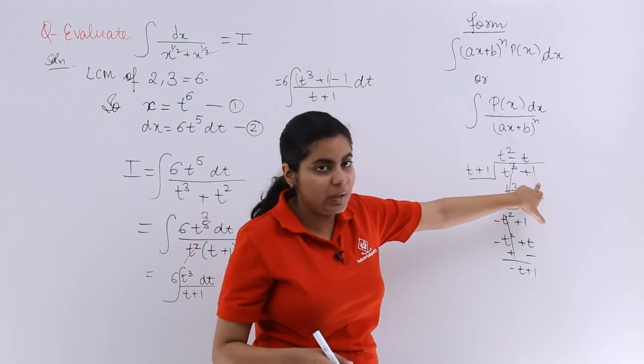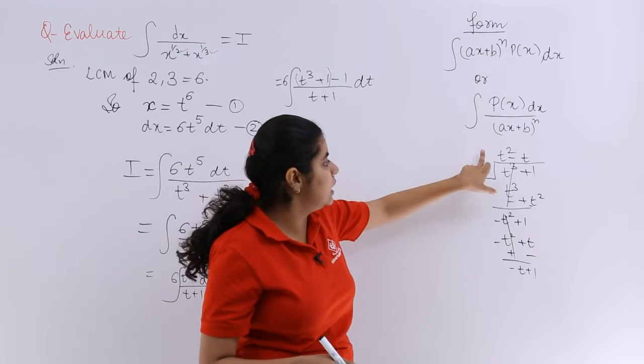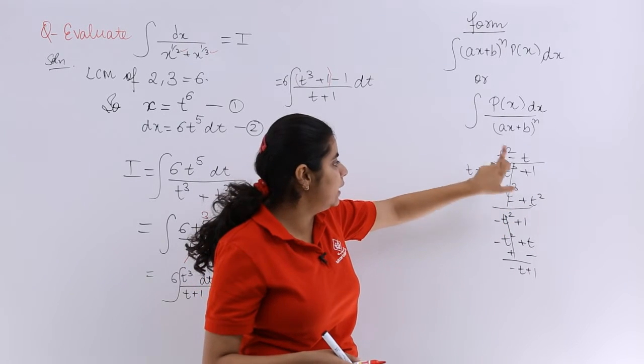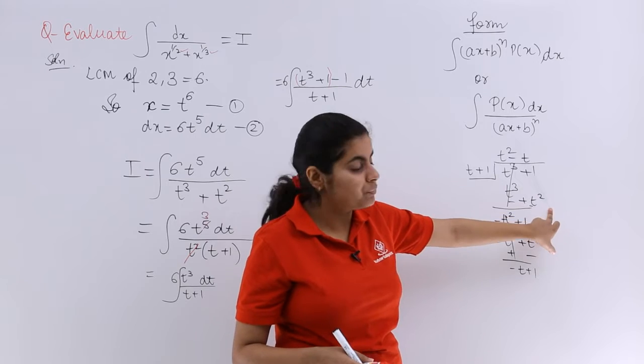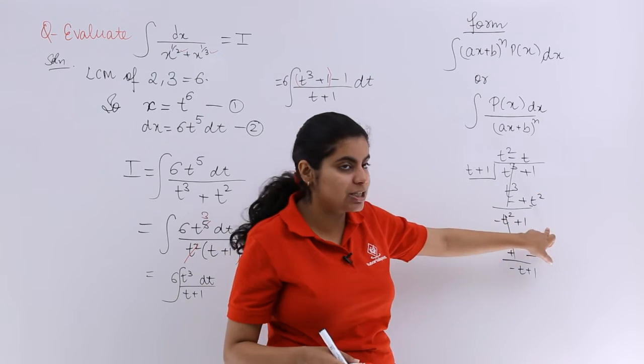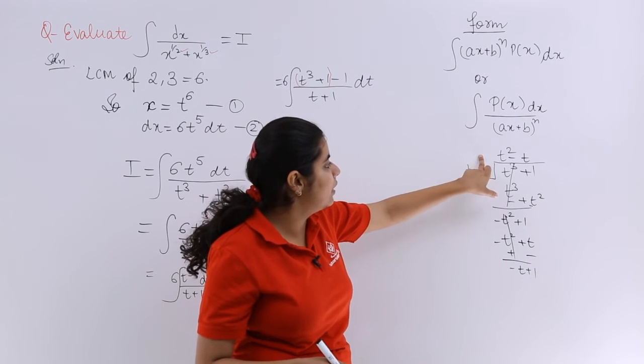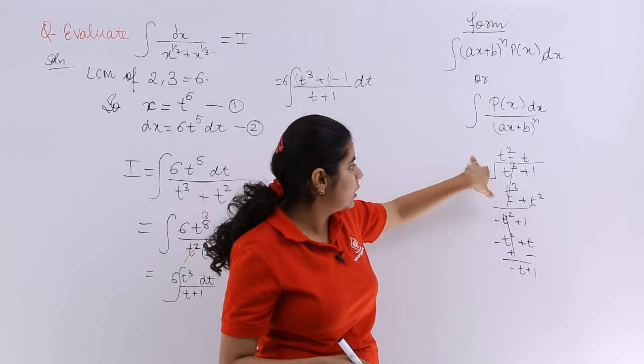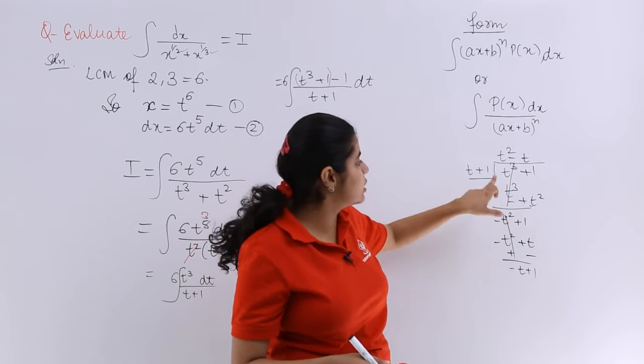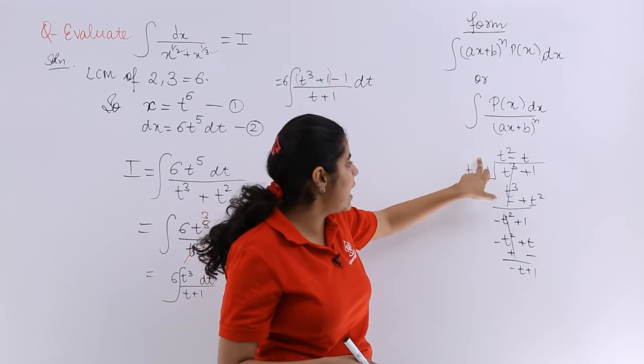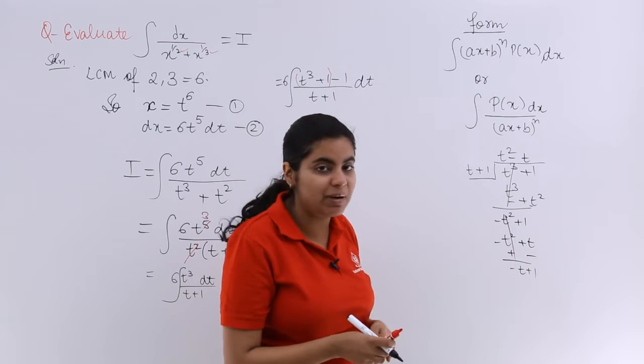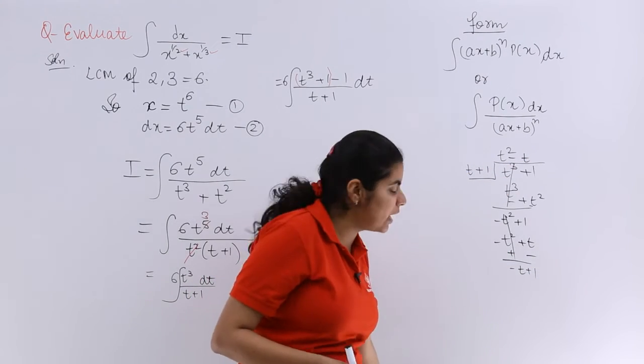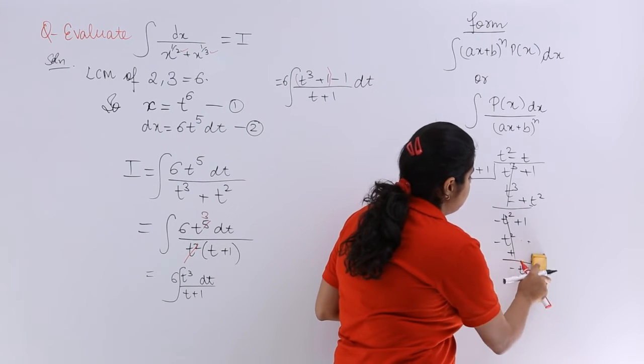See, t cube plus 1 was there. So it is t into t square which is making it t cube. Then 1 into t square is nothing but t square. So it is minus, this is plus, minus t square plus 1. Then I have plus, t is there and it is minus t square. So t into minus t is minus t square. And 1 into minus t is minus t. So this was a mistake. It should have been minus t. So let's make it minus t.